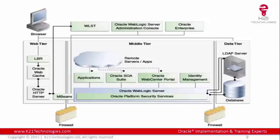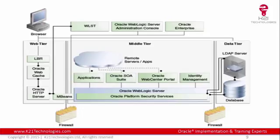This is the high-level architecture of Fusion Middleware. On the left, we have the web tier through which users can connect to applications. In the middle, we have the middle tier that hosts business applications like SOA Suite, WebCenter Portal, Identity Management, or any other application. We have a data tier that holds user data in either LDAP or a database. On the top, we have tools for administering Fusion Middleware — WLST as a command-line tool, WebLogic Console, or Oracle Enterprise Manager. On the bottom, we have Oracle Platform Security Service. All these layers are protected through firewalls.